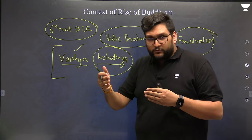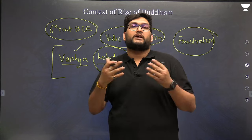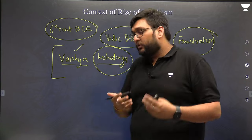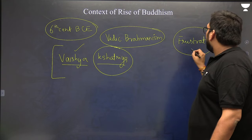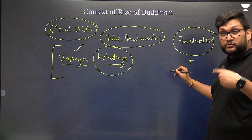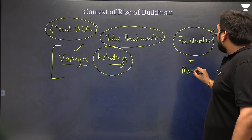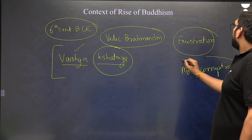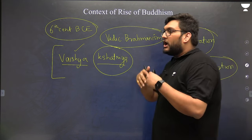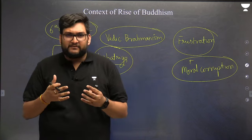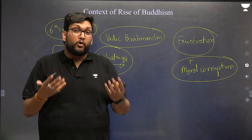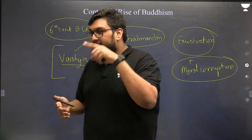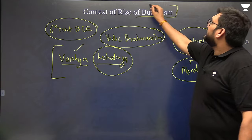The Vaishya community got a lot of wealth in the 6th century BC, but was not able to get social status, remaining third in the Varna ranking. The Kshatriyas had power but were still second to the Brahmins. Therefore, the rising frustration and anger with the Vedic Brahministic fold created the context in which the audience for new heterodox religions was ready — and therefore, Buddhism.